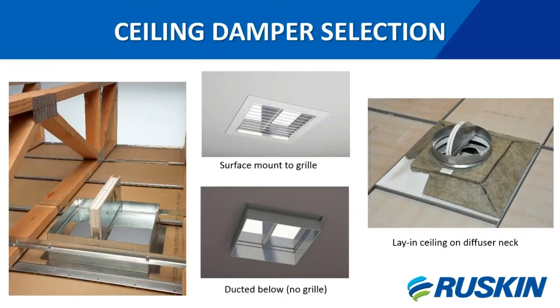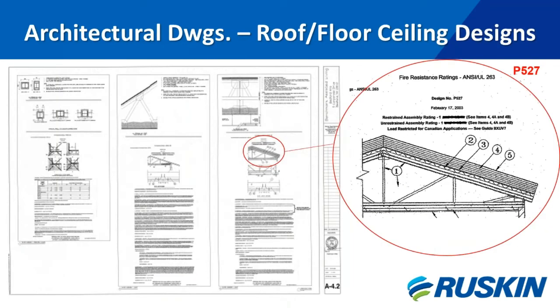When selecting which CFD to use, start with the architectural prints, which should show and call out a roof-ceiling or floor-ceiling plan and description. In most cases, a design number is called out on the drawings. This design number is the most important item on the drawing — with this number, we can look up the design and determine which damper should be used in that assembly.